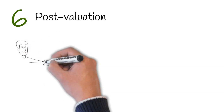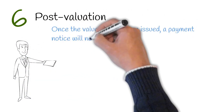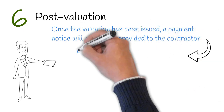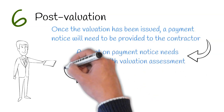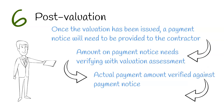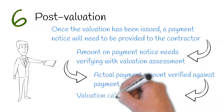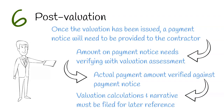Stage 6: Post-Valuation. Once the valuation has been issued, a payment notice will need to be provided to the contractor. The amount on the payment notice will need to be verified with the valuation assessment. Once payment has been made, the amount will need to be verified against the payment notice and a record should be kept of the amount paid to the contractor. All valuation calculations and narrative must be filed for later reference. Keeping records is vital and will be especially important should the contractor challenge any of the payments through an adjudication.